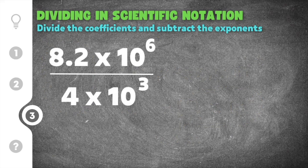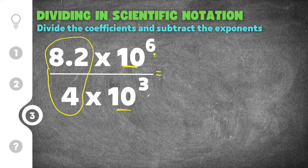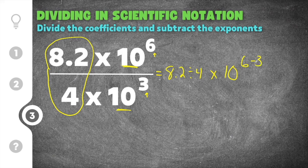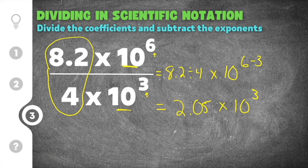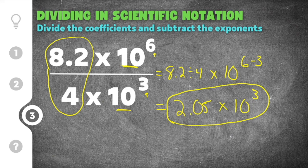Our last practice problem gives us 8.2 times 10 to the 6th divided by 4 times 10 to the 3rd. We divide the coefficients: 8.2 divided by 4, times 10 to the power of 6 minus 3. Simplifying: 8.2 divided by 4 is 2.05, times 10 to the 3rd power. We check if this is correct scientific notation — 2.05 is between 1 and 10, so this is the correct answer written in proper scientific notation.